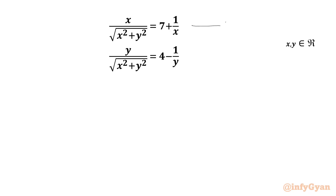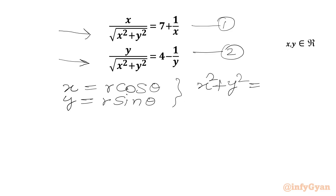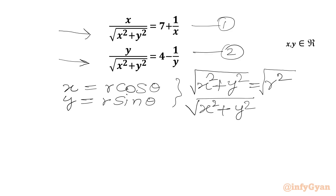Let's get started by considering equation 1 and equation 2. We have square root of x² + y² in the denominators, so we can think about polar form or trigonometric substitution. We assume x = r·cosθ and y = r·sinθ. Squaring and adding gives x² + y² = r²(cos²θ + sin²θ) = r². Taking the square root, since r must be positive, we get √(x² + y²) = r.